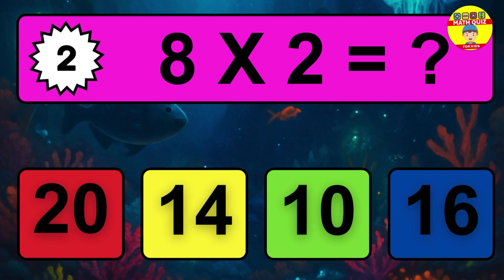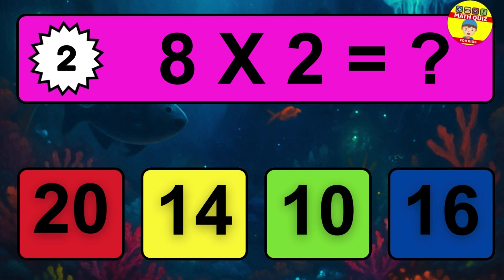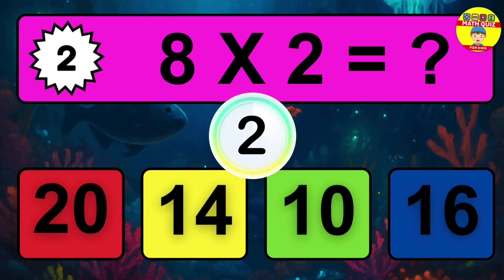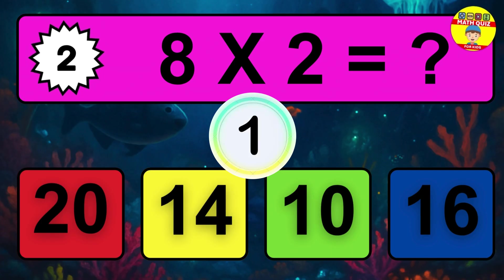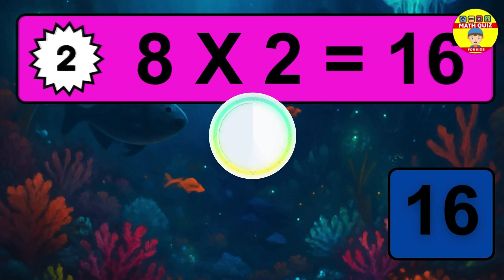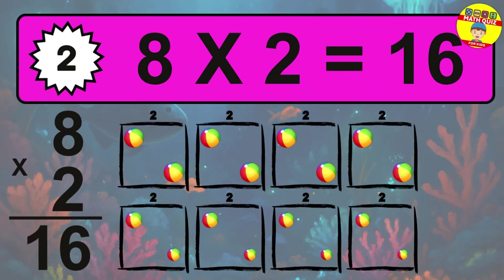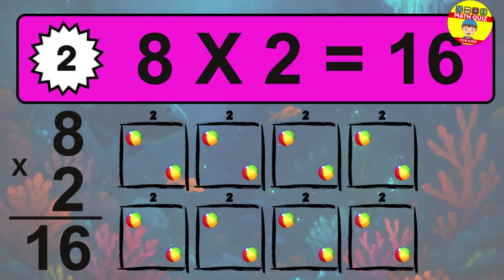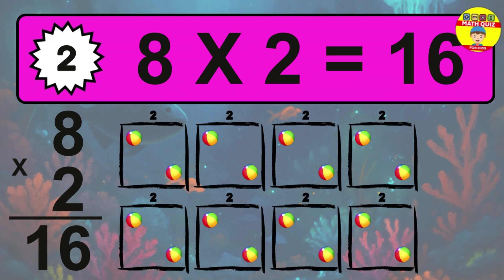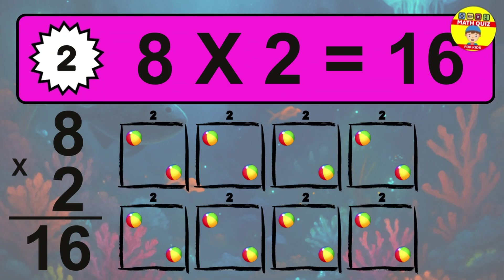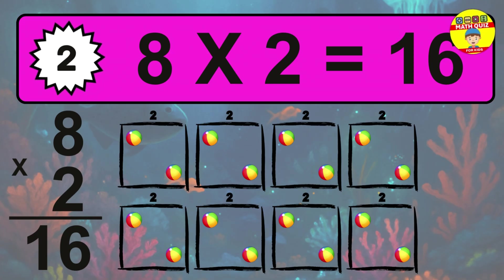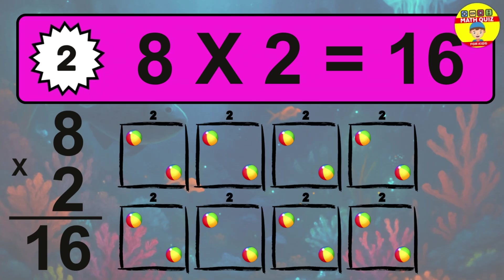Question 2. 8 times 2 equals what? The answer is 8 times 2 is 16. To calculate, we have 8 groups with 2 balls each one. So how many balls do we have? 16 balls.